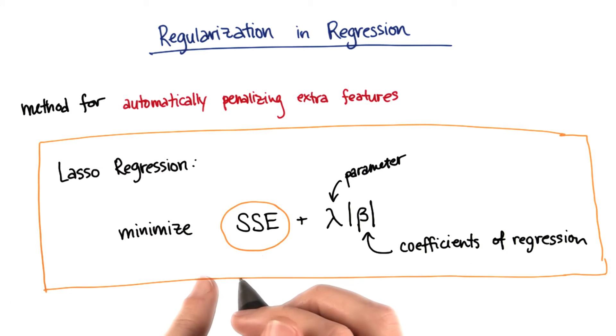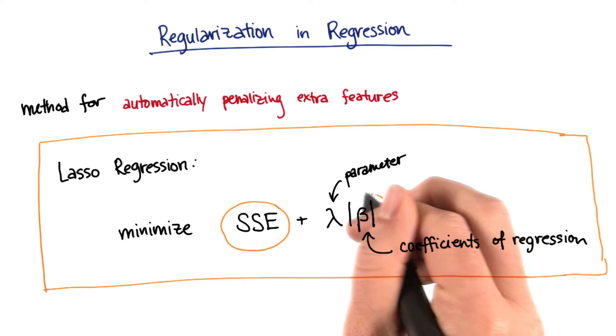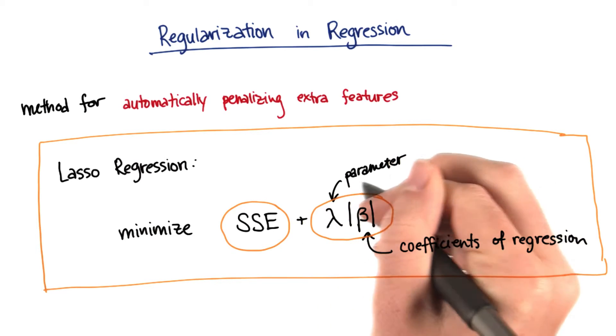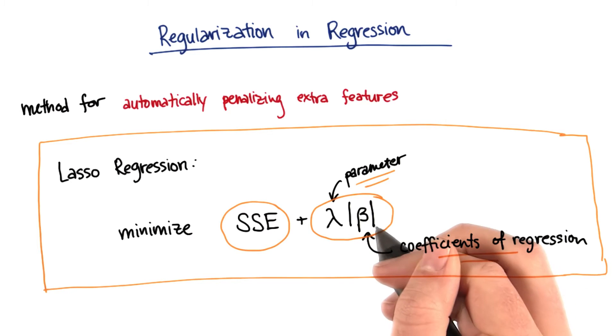What lasso regression says is, we want a small sum of squared error, but in addition to minimizing the sum of the squared errors, I also want to minimize the number of features that I'm using. So I'm going to add in a second term here in which I have a penalty parameter and the coefficients of my regression. This is basically the term that describes how many features I'm using.